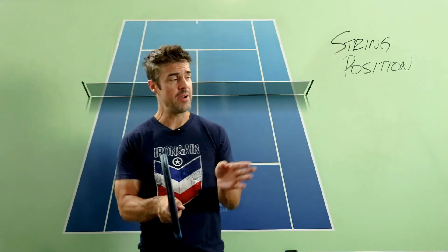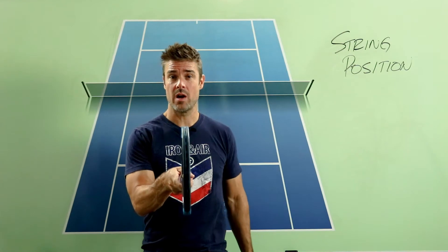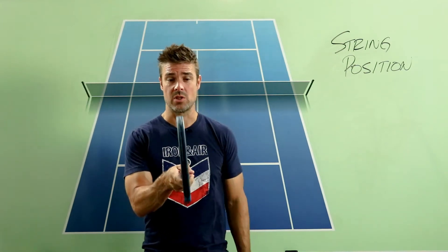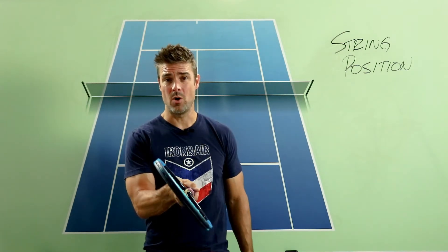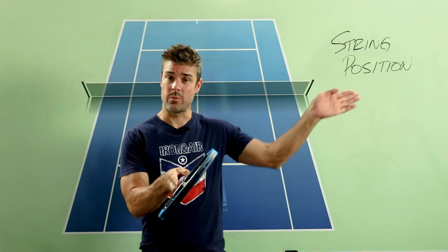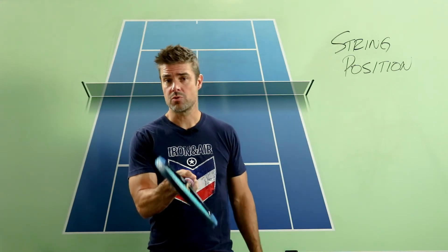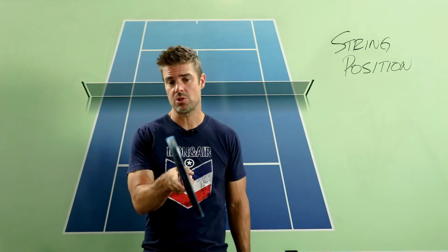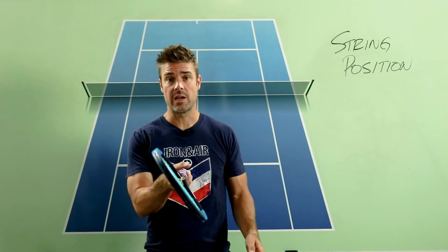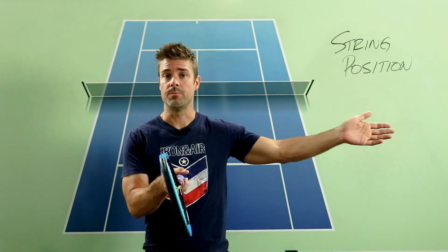So if I'm hitting this way, that is a square — straight up and down — string position. That would be open, and that would be closed. Again, we're hitting this way. So string position is just how you position your strings vertically, horizontally, whatever, compared to the ball.